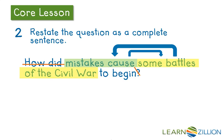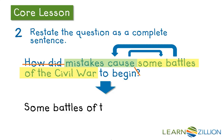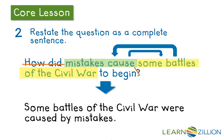I could take 'some battles of the Civil War' and put it first, take 'mistakes cause' and put it second, and flip that sentence to make it a complete sentence. I could say something like: some battles of the Civil War were caused by mistakes. Perfect! I took away the question words, the question mark, and just flipped that sentence to make it complete.